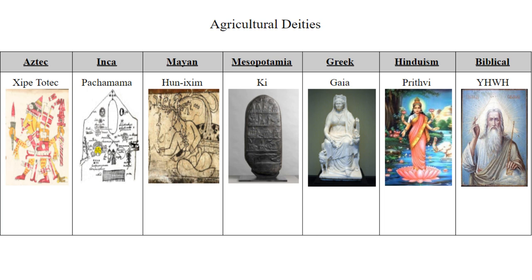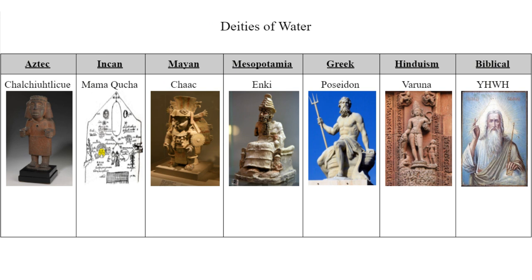Next are Agricultural Deities. These deities either represent the earth itself — for example, Pachamama or Gaia — or they are some aspect of agriculture or shapers of the earth, such as Yahweh. The image of Pachamama is interesting because it's not actually an image of Pachamama herself, but an image of Inca cosmology that represents her. Next are the deities of water, or some aspect of water. Most of these are gods of the ocean or of rivers, with the exception being Yahweh, who is the god of everything.